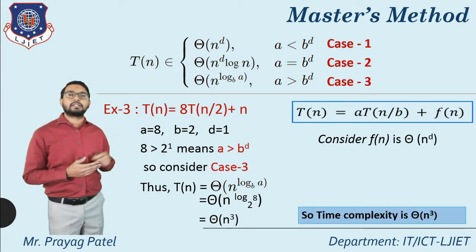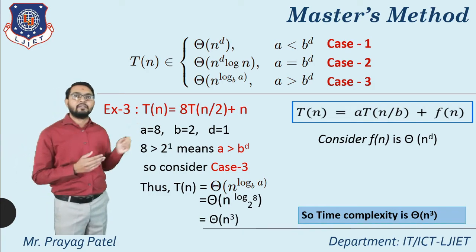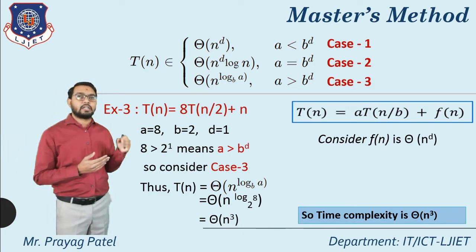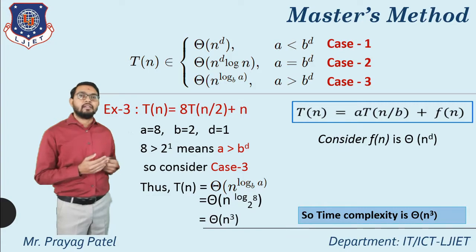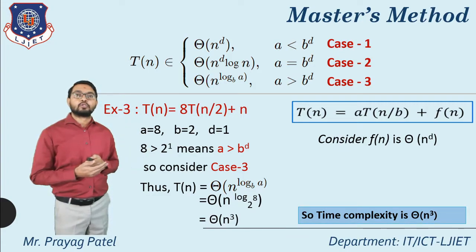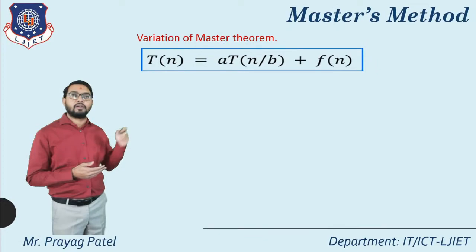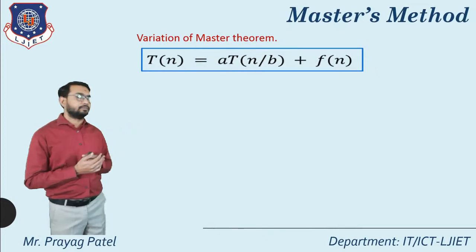So the final complexity of example 3, T(n) = 8T(n/2) + n, is Θ(n³). This is the complexity of our example.